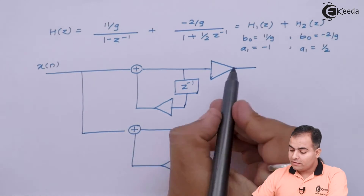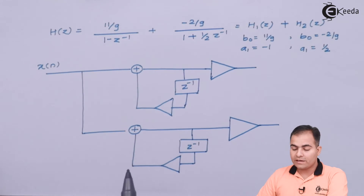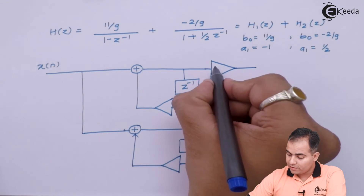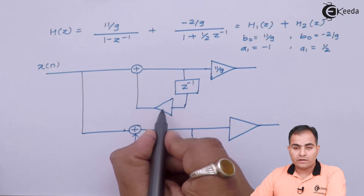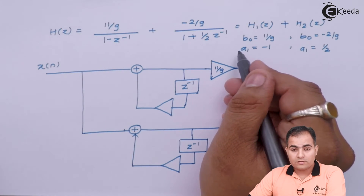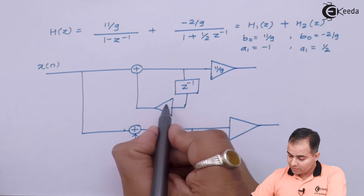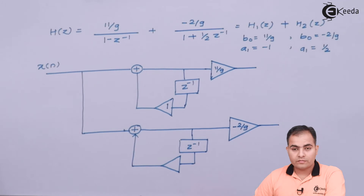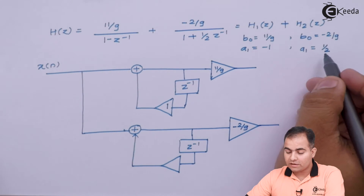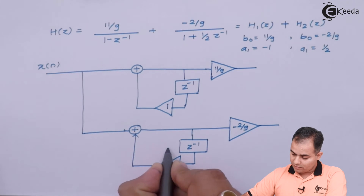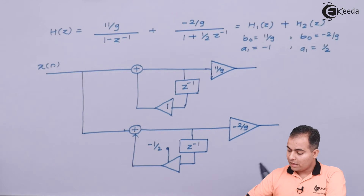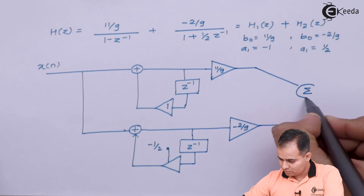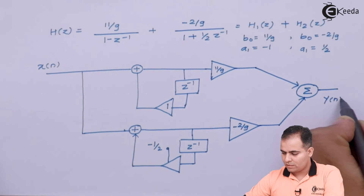The first upper block gives H1(Z) and the second gives H2(Z). In H1(Z), the B0 value is 11/9 and the A1 coefficient, after multiplying by minus sign, becomes minus of minus 1 = +1. In H2(Z), the B0 value is -2/9, and A1 = 1/2 after multiplying by minus sign becomes -1/2. Both outputs are then connected with a wire and added using a summation block, completing the parallel form.